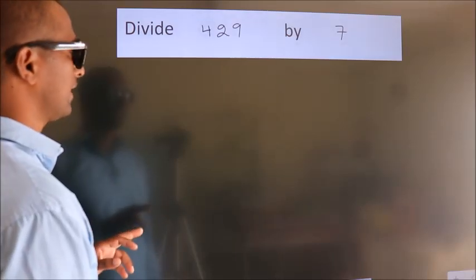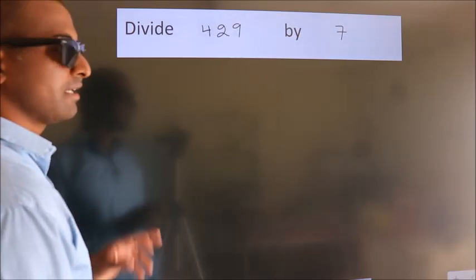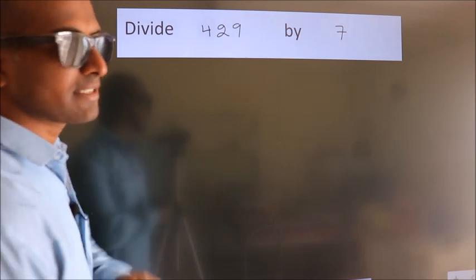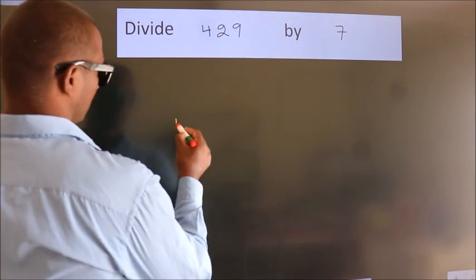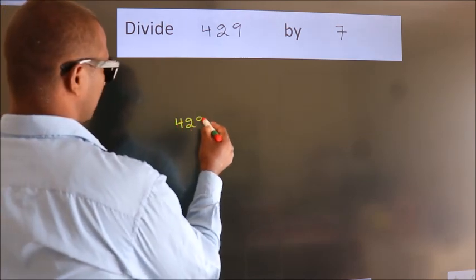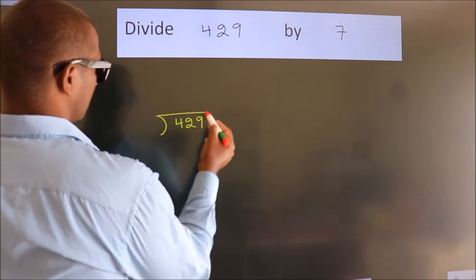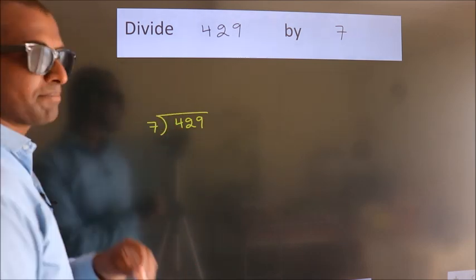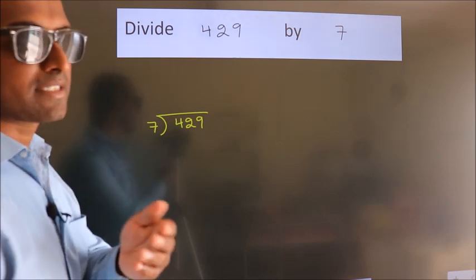Divide 429 by 7. To do this division, we should frame it in this way. 429 here, 7 here. This is your step 1. Next.